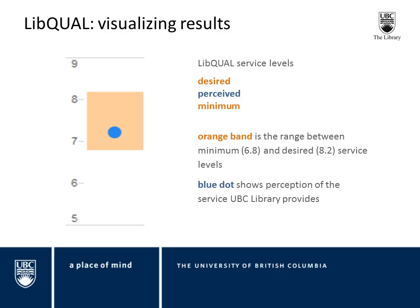Moving on to some examples using Tableau. This is an ARL audience, so I trust most of you are familiar with LibQual. When LibQual results come in, you get quite a pile of numbers. For each question there are desired, minimum, and perceived service levels across different user groups. In this visual presentation, I have an orange bar indicating the distance between my minimum score and my desired score, and a blue dot showing where the perceived score falls within that range.